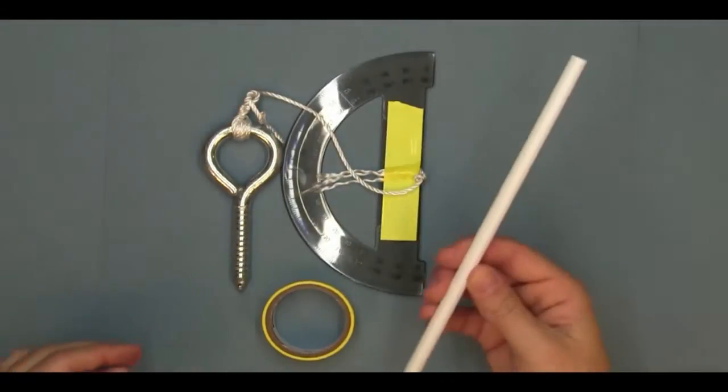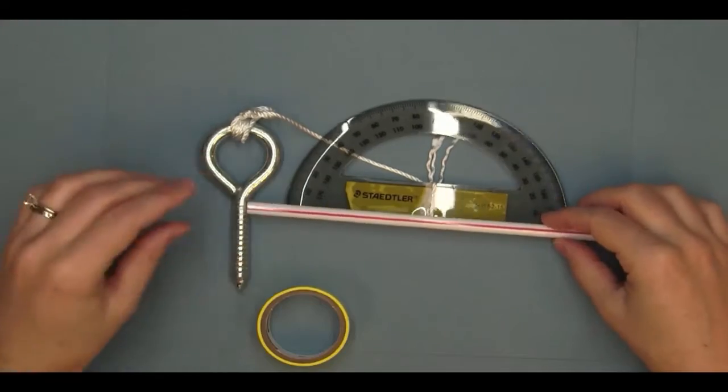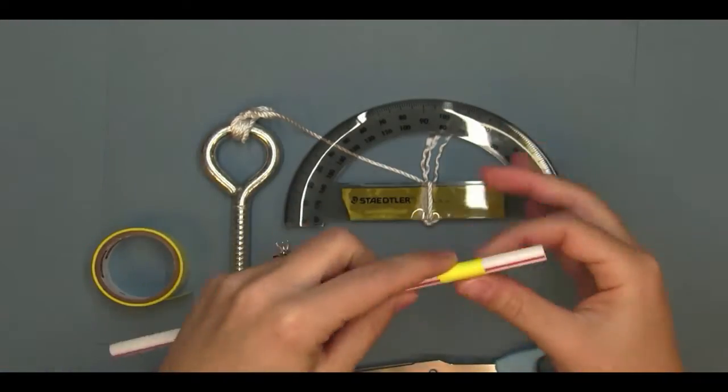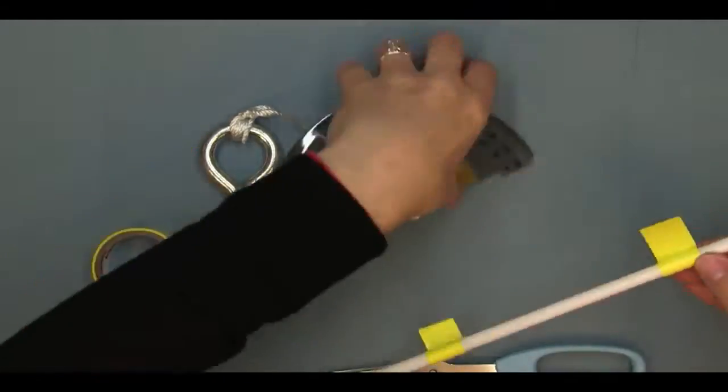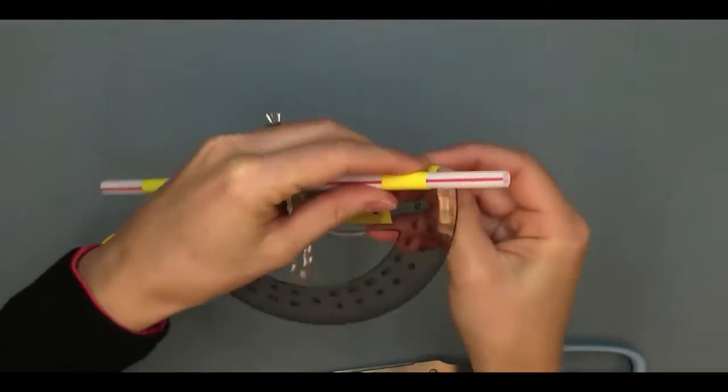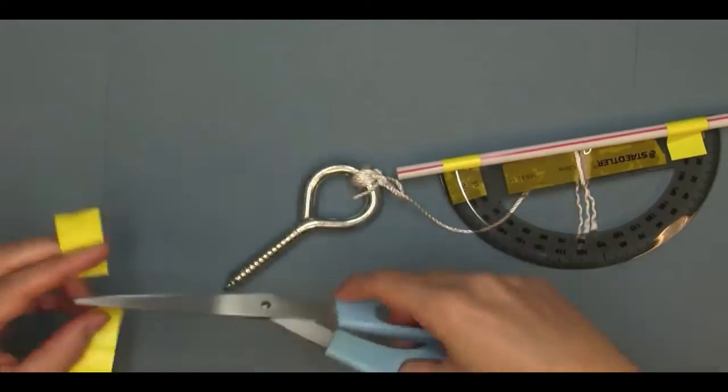Next we'll attach the straw as a sighting device, so I'm going to tape it along the edge of the protractor, right along the line that you use as a guide for measuring angles. Once you have it positioned where you want it, add some more tape to help hold it in place and keep the straw level.